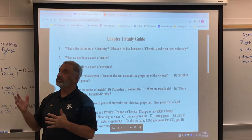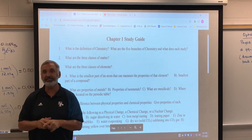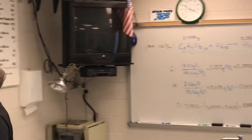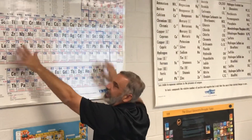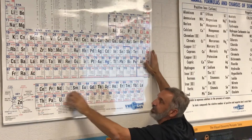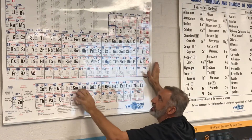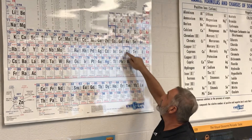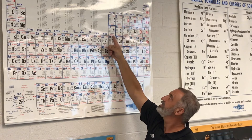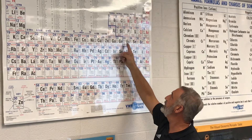Nonmetals can be solids, liquids, or gases. Those right along the zigzag line on the periodic table are your metalloids. Everything to the left is a metal, everything to the right is a nonmetal. All along the zigzag line are your metalloids, except for aluminum — everybody knows aluminum is a metal. Boron, silicon, germanium, arsenic, antimony, tellurium, and polonium are all metalloids. They have properties of both metals and nonmetals and are kind of hard to classify.